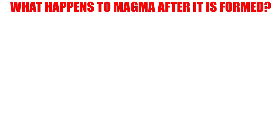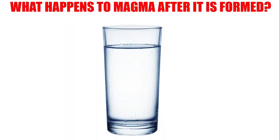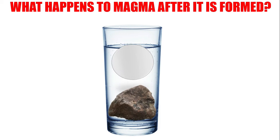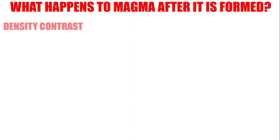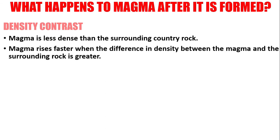So what happens to magma after it is formed? Imagine a water container, and you have a rock and a styrofoam. You decided to throw them both in the water. As you can see, the rock stays at the bottom, and the styrofoam floats. It's because the styrofoam is less dense than the rock. This is the same with magma — it's because of the density contrast. Magma is less dense than the surrounding country rock, and it rises faster when the difference in density between the magma and the surrounding rock is greater.